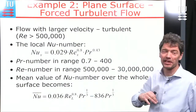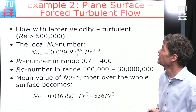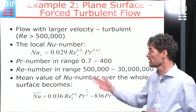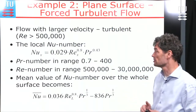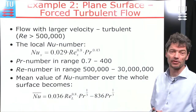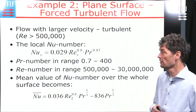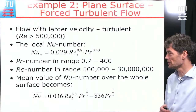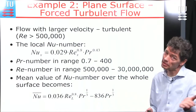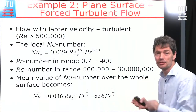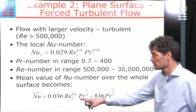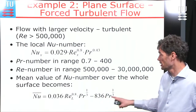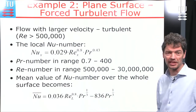Example two is also for a flat surface, but now with forced turbulent flow, meaning the Reynolds number is greater than 500,000. Literature provides a formula for the local Nusselt number at location x, with certain conditions on valid Prandtl and Reynolds number ranges. You can also find the average Nusselt number from another formula — identify the formula and calculate the Reynolds number and Prandtl number for your case.